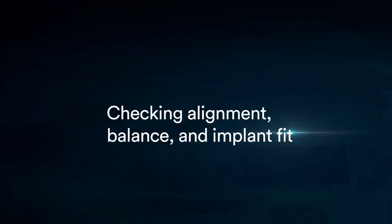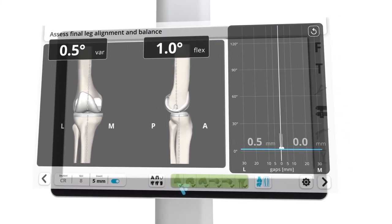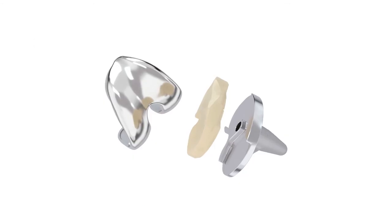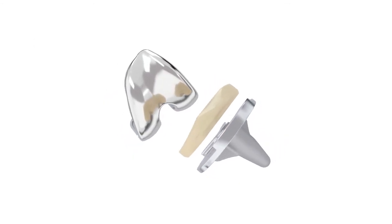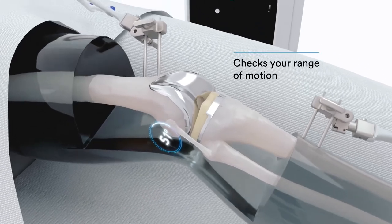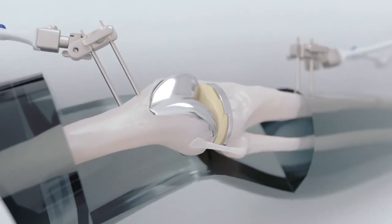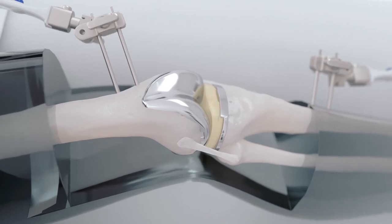The technology software is used to verify your final alignment and balance. The implant components are placed and your surgeon will check the range of motion. Then your surgeon will remove the trackers and close the incision site.